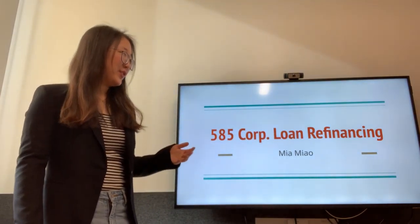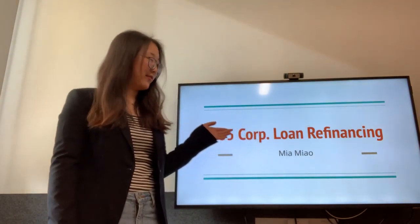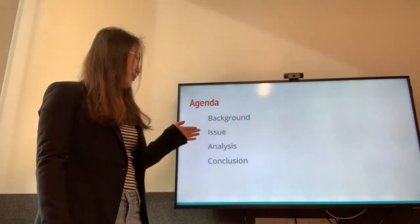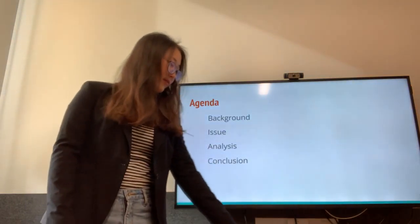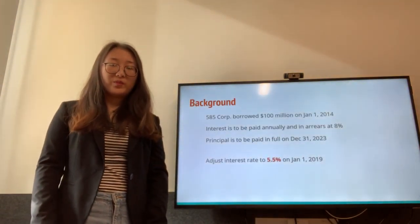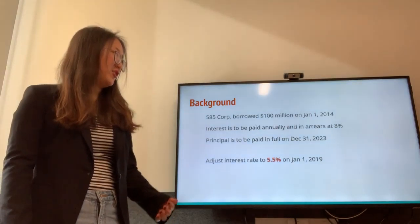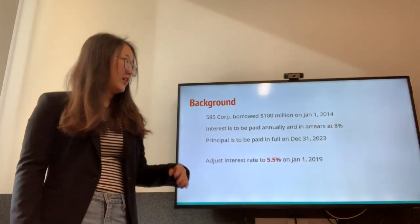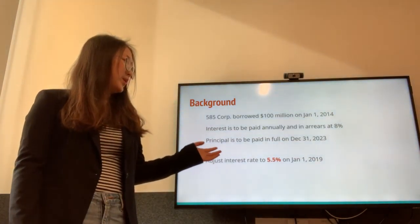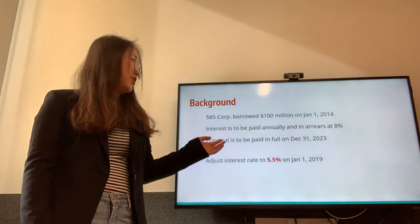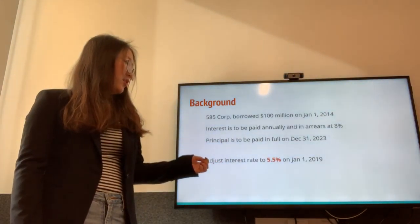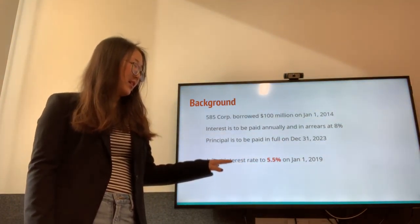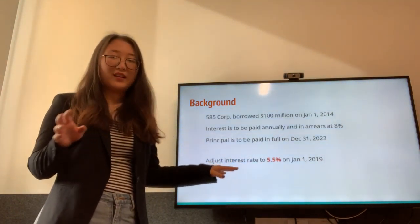Today I'm going to talk about the accounting treatment for the loan refinancing of 585 Corporation. I will go through the background, issue analysis, and conclusion. 585 Corporation borrowed $100 million on January 1st, 2014. The interest is paid annually in arrears at 8%, and the principal is to be paid in full on December 31st, 2023. Five years later, on January 1st, 2019, the interest rate was adjusted to 5.5 percent.